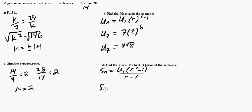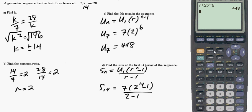So, if we're looking for the first 14 terms, the sum of 14 equals 7 times 2 to the 14th power minus 1 over, common ratio is 2, so 2 minus 1. That's kind of nice that 1's on the bottom there. So, let's break out the calculator here again.